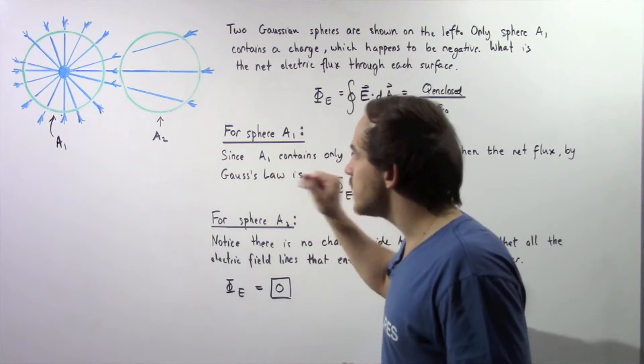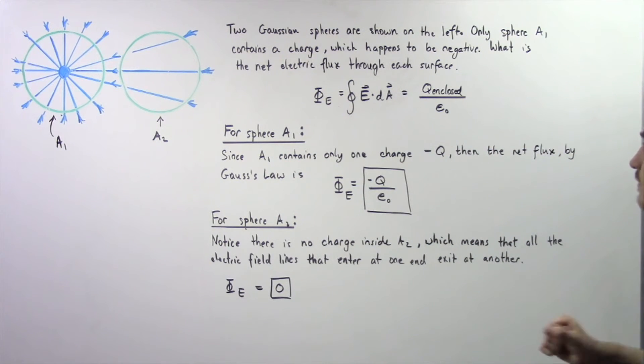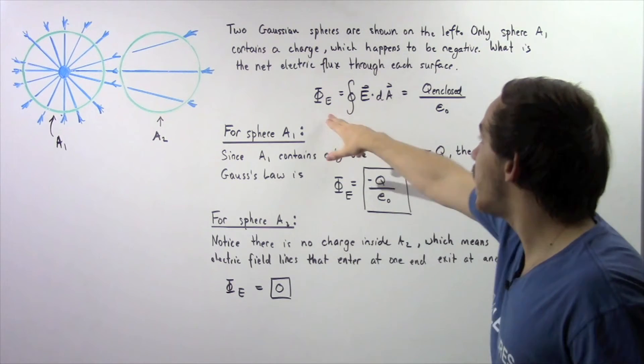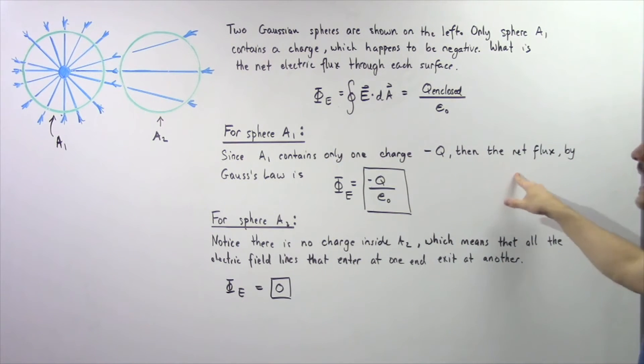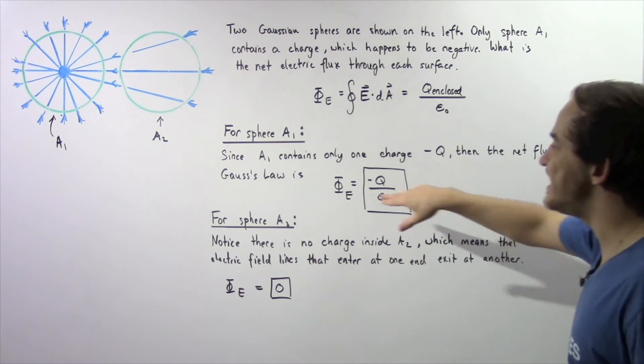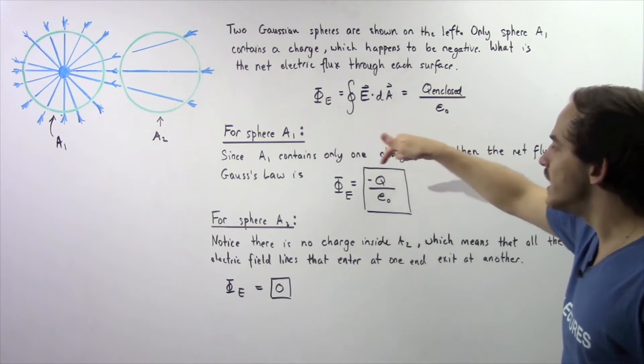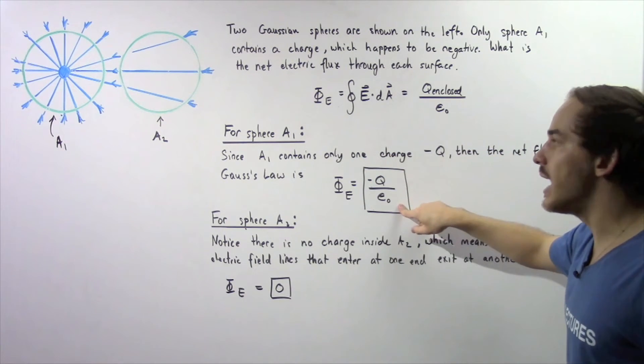Now, since sphere A1 contains only one charge, and that's given by negative Q, then that means by Gaussian Law, the net flux is equal to the following ratio. The net electric flux is equal to negative Q divided by epsilon naught.